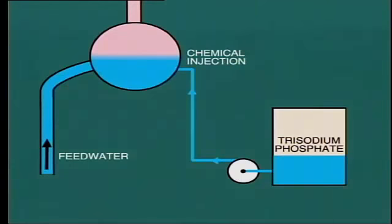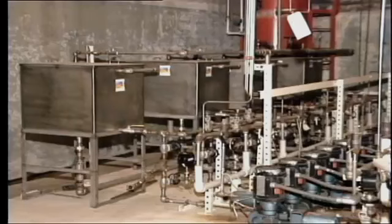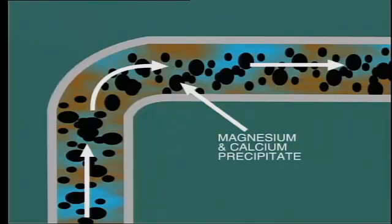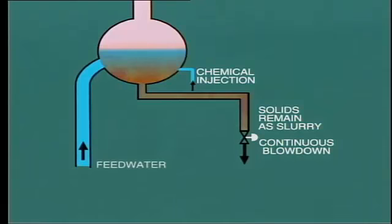We'll be talking more about corrosion later in this module. Even with all these precautions and controls, there is still a tendency for the concentration of solids to build up in the boiler water. For this reason, an attempt is made to prevent scale formation by injecting a chemical dispersant such as phosphate into the boiler water, usually added at the boiler drum via a high pressure pump. Phosphate has the effect of keeping the magnesium and calcium precipitate in suspension by dispersing the solid particles throughout the water. The result is that instead of forming a hard scale, the solids remain as a slurry to be discharged from the boiler through the continuous blowdown line.